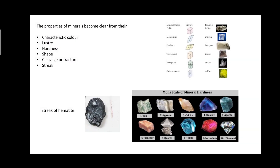Different minerals have different properties, such as their characteristic color. For example, you can see the color of gold and silver — they are known by that color itself. Next is lustre, which is the shine that the mineral gives out. For example, diamonds give a non-metallic vitreous lustre, while metals such as copper and aluminium give a metallic lustre. Then we have hardness — all minerals are not the same.